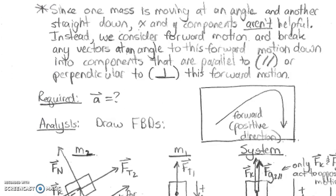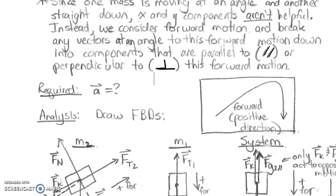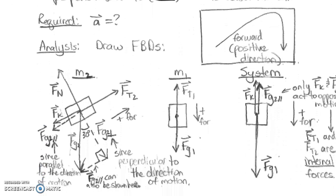The first thing we notice is that since one mass is moving at an angle and another straight down, x and y components aren't helpful. Instead, we want to consider forward motion and break any vectors at an angle into components. We'll use parallel lines as a subscript instead of x and y, and perpendicular lines as a subscript for anything perpendicular to the forward motion.